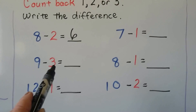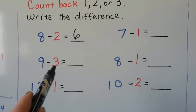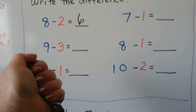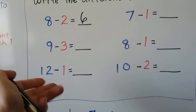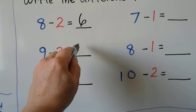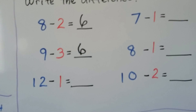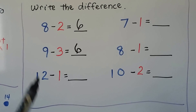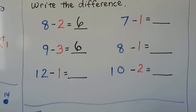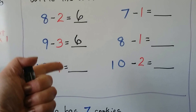9 minus 3. We start with 9 and we count back 3: 9, 8, 7, 6. That's also equal to 6.